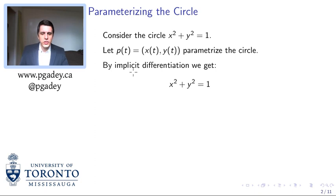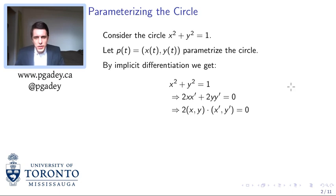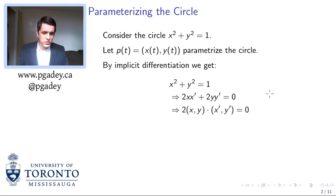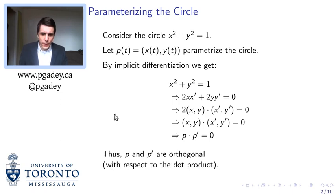So p of t will be our parameterization, and it's going to have two components: x sub t and y sub t. We'll start off with our circle and implicitly differentiate. That gives us 2x·x prime plus 2y·y prime equals 0. Notice that this is really an inner product — we've got these two products that we're adding together, and we can rephrase that whole thing as an inner product of two vectors.